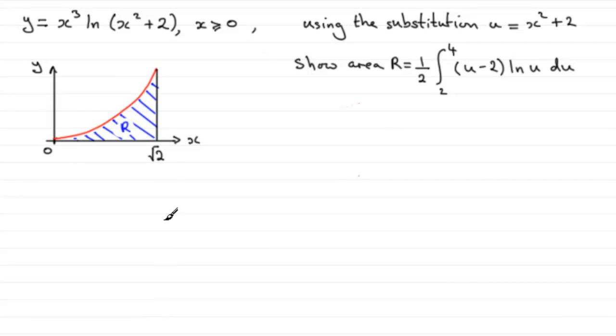Now for this question, we've got our curve where X is greater than or equal to zero. We've got it sketched here, and we've got this shaded area R, which is bounded between the curve, the line X equals root 2, and the X axis.